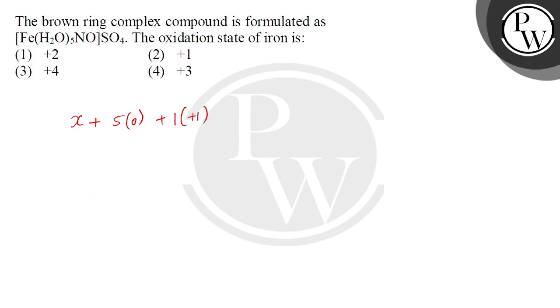And sulfate - SO4 is written inside the formula. We know that it is -2. Since the complex is neutral, the equation equals 0. So, we will solve this.